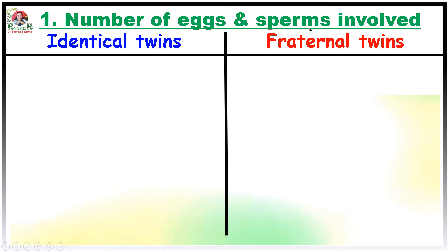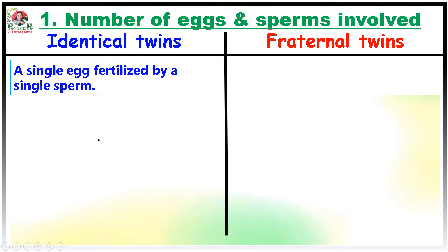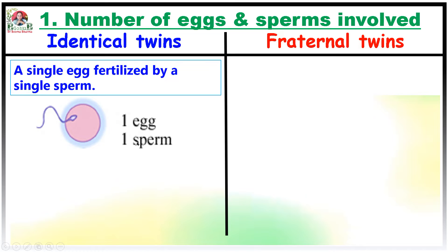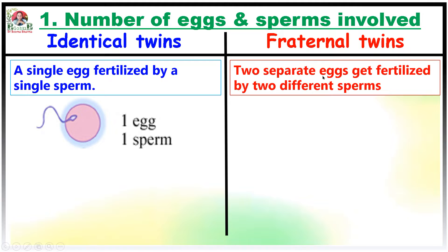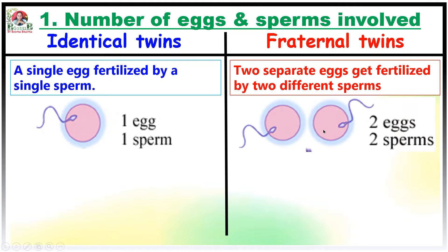The first parameter is about the number of eggs and sperms involved. In case of identical twins, a single egg gets fertilized by a single sperm. On the other hand, in case of fraternal twins, two separate eggs get fertilized by two different sperms.